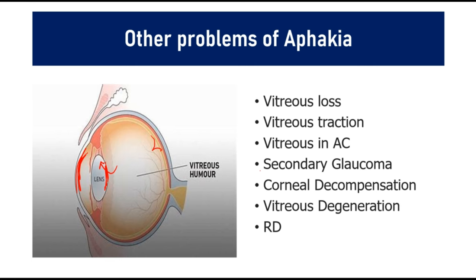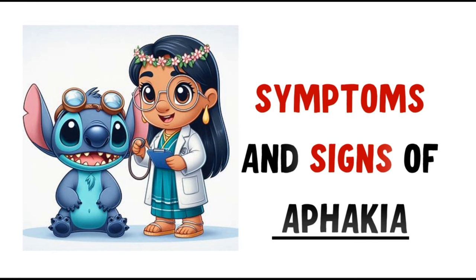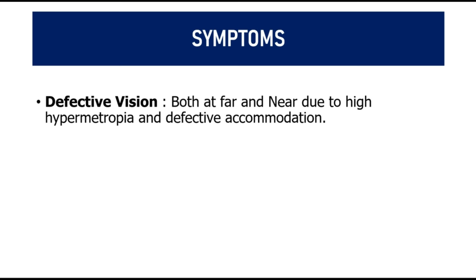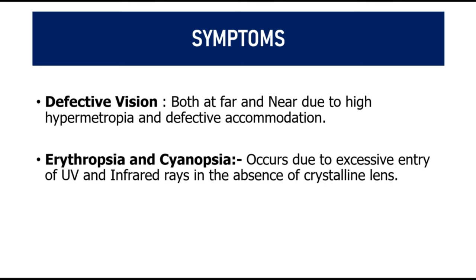These are long-term complications associated with aphakia. Symptoms include defective vision at both far and near — far vision is affected due to high hypermetropia, and near vision due to loss of accommodation. Since the lens normally absorbs UV and infrared rays, their absence causes excessive entry of UV and infrared rays, resulting in colored hues: a reddish hue is called erythropia and a bluish hue is called cyanopsia.